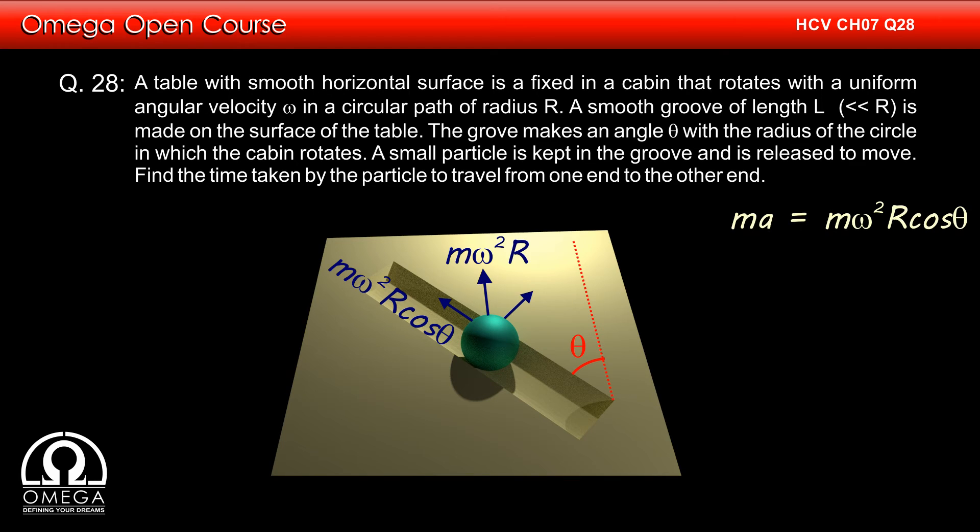If the mass of the particle is m and its acceleration along the groove is A, then ma must be equal to m omega square R cos theta, which implies A is equal to omega square R cos theta.